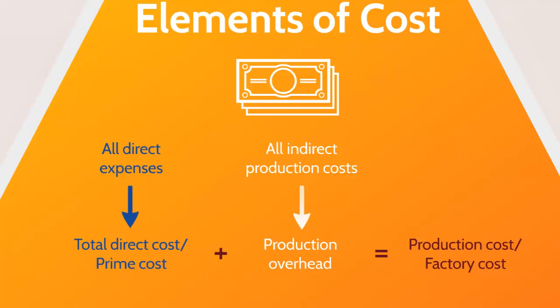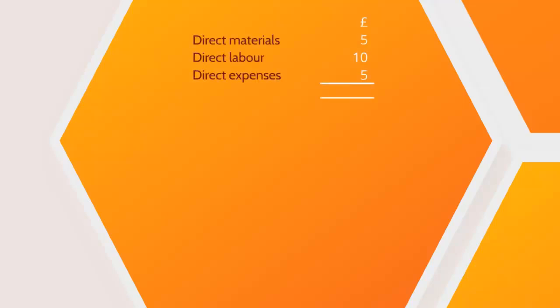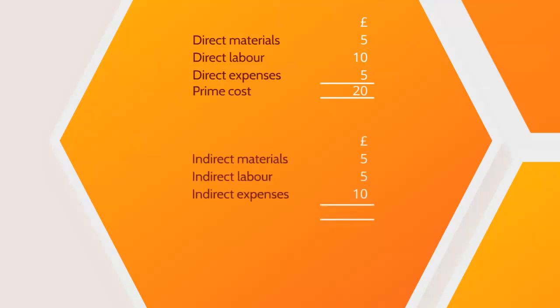Let's see how all of this works with some figures. Let's say our car factory also produces a model toy version of their best-selling car with the following direct costs. We sum these together to give us the prime cost — in this case £20. We then sum together the indirect costs, and the term for this sum is the overhead costs, which in this case is also £20. The final step is to add the prime cost and production overhead together — the term for this is the factory cost, which for our model toy car comes to £40.